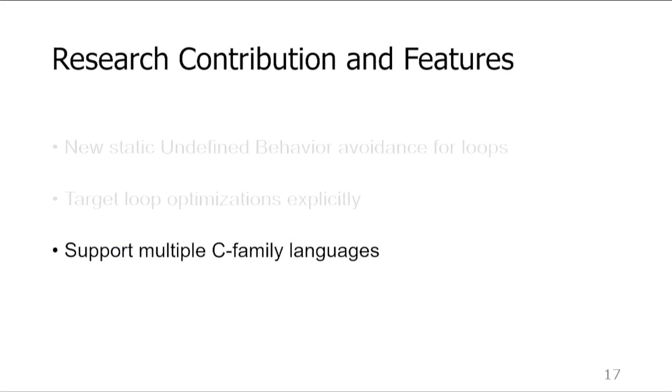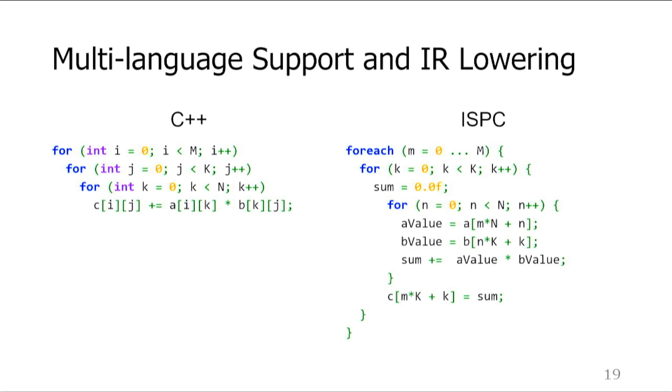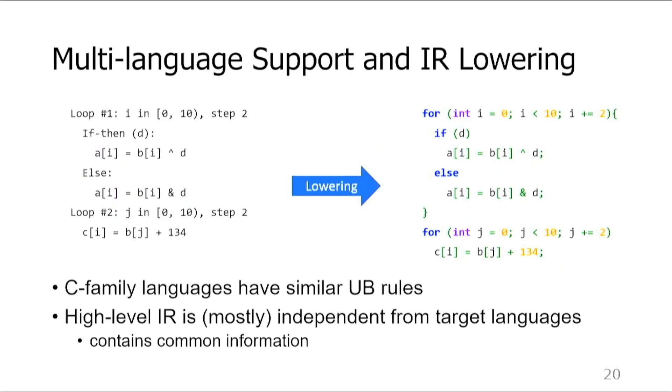Next, we'll talk about how we support multiple C-family languages. When we discuss algorithms, we usually use high-level abstractions. For example, when I say matrix multiplication, you probably think about mathematical definition of it, rather than how it is implemented in C++ or ISPC. These two code snippets look very different, but they perform the same task. This is how humans think about writing code, and YarpGen tries to mimic it. We separate the test's essence from its form. We construct code in high-level IR, and then lower it to the concrete syntaxes of the selected target language. We can do it because the rules for undefined behavior in C-based languages are similar. The shared core language elements and the difference between them are small enough to fit into the common architecture of the project. Our high-level IR is mostly language agnostic and captures the information that is shared between multiple languages.